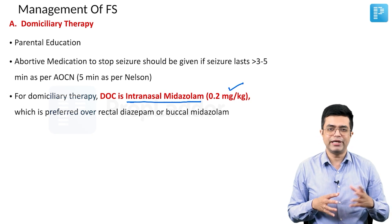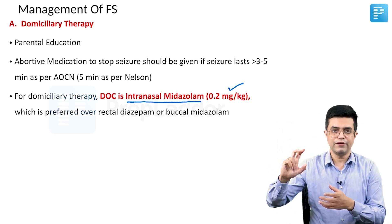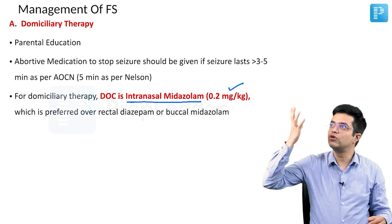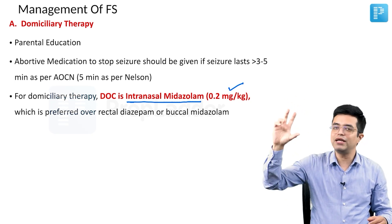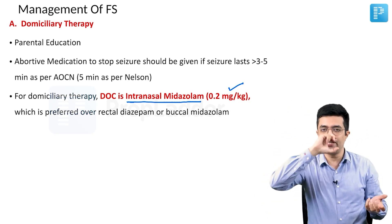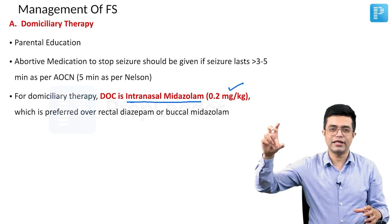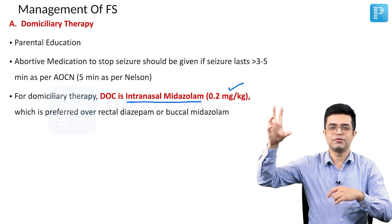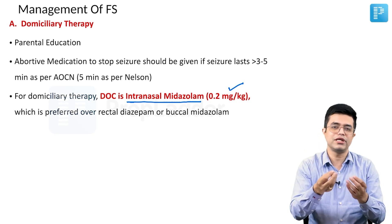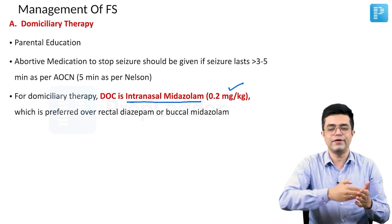You need to activate the spray first: shake it properly with the cap closed, then remove the cap and do one puff — with the first puff nothing comes out. With the second puff, mist appears and the spray is activated. Based on the dosage and concentration, one or two puffs in one or both nostrils are given depending on the age and weight of the child — 0.2 mg per kg midazolam as SOS therapy whenever the child has a seizure exceeding 3 to 5 minutes. Parents must be educated on this beforehand, otherwise in a panic they will waste the first two puffs.